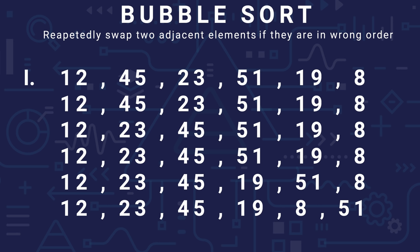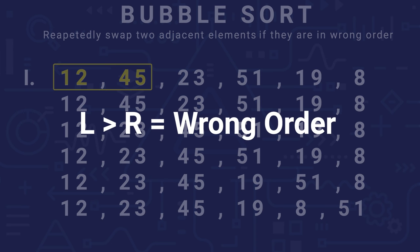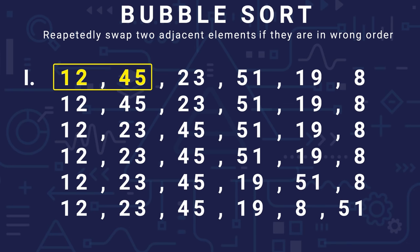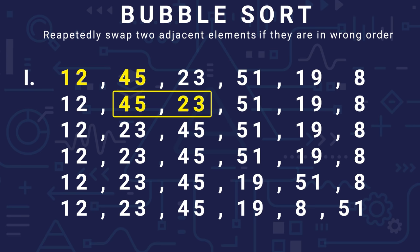We compare two adjacent elements — wrong order means the left number is bigger than the right number. So first, let's compare 12 and 45: they are not in wrong order, so we move on. Next we check 45 and 23 — they are in wrong order, so we swap them: 23 goes here and 45 goes here.